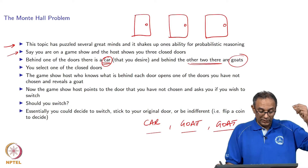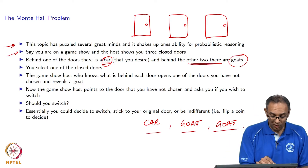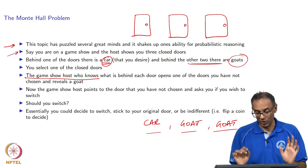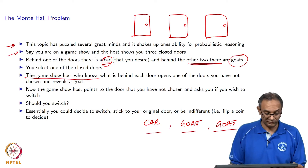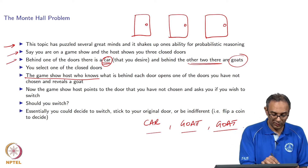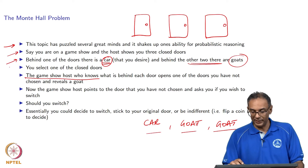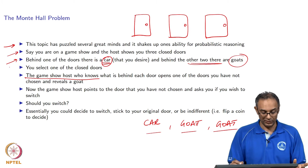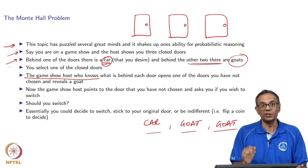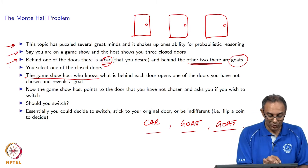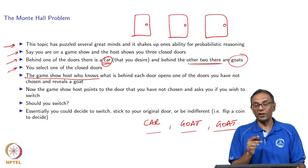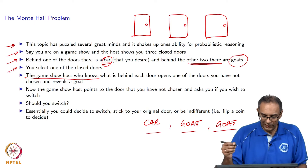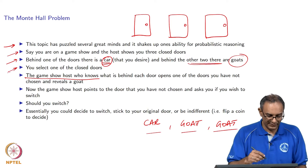The game show host knows what is behind each door - that is an important thing to know. Behind one door there is a car, behind the other two there are goats, and the game show host knows which is what is behind what. So you select one of the closed doors, and let us say, for example, you select door number...